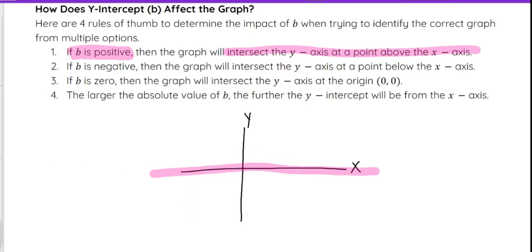Now, if the y-intercept is negative, it's going to cross somewhere below the x-axis. The y-intercept doesn't indicate whether it is a positive slope or a negative slope, but it just indicates where it is going to cross the y-axis in reference to the x-axis.